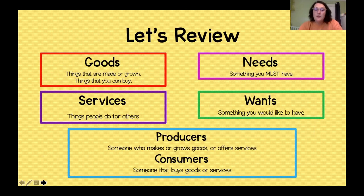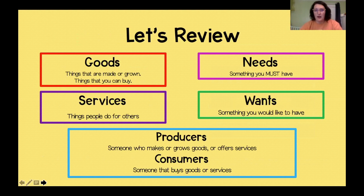Let's review a little bit of vocabulary. The first week I taught you, we talked about goods and services — goods are things that are made or grown or that you can buy, and services are things that people do for others. After that, we talked about being a producer and a consumer. Producers are the people who make or grow goods or offer services, and a consumer is someone who buys the goods or the services.